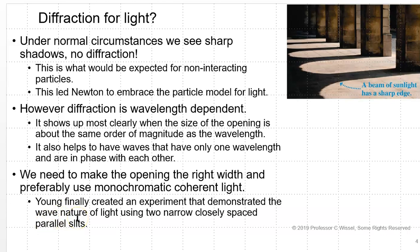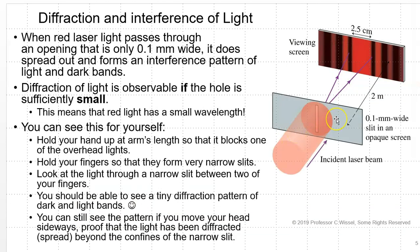Young finally did this. He created an experiment to demonstrate the wave nature of light using two narrow, closely spaced parallel slits. You don't need just two slits — one slit will work. When you put laser light on a narrow slit that is only 0.1 millimeters wide — you can barely see that with your naked eye — it spreads out and forms an interference pattern of light and dark bands. The diffraction of light is observable if the slit width is small.